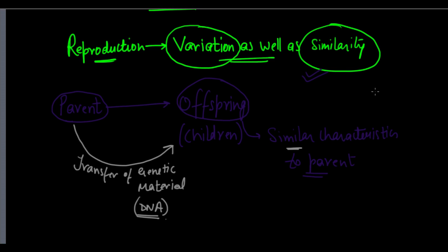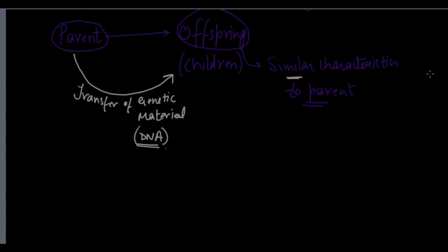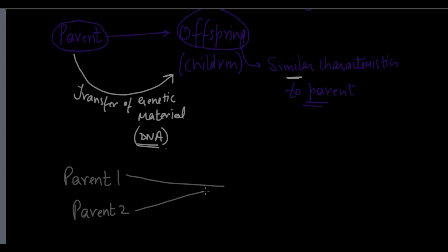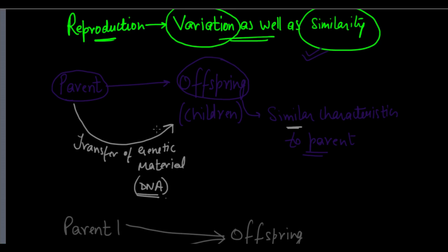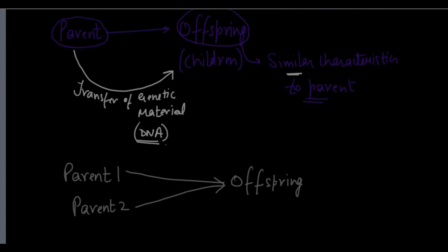In the general case of one parent producing offspring, we see that the majority of the characteristics of the offspring are the same as that of the parent, because there is simply a transfer of genetic material from one parent to the offspring.